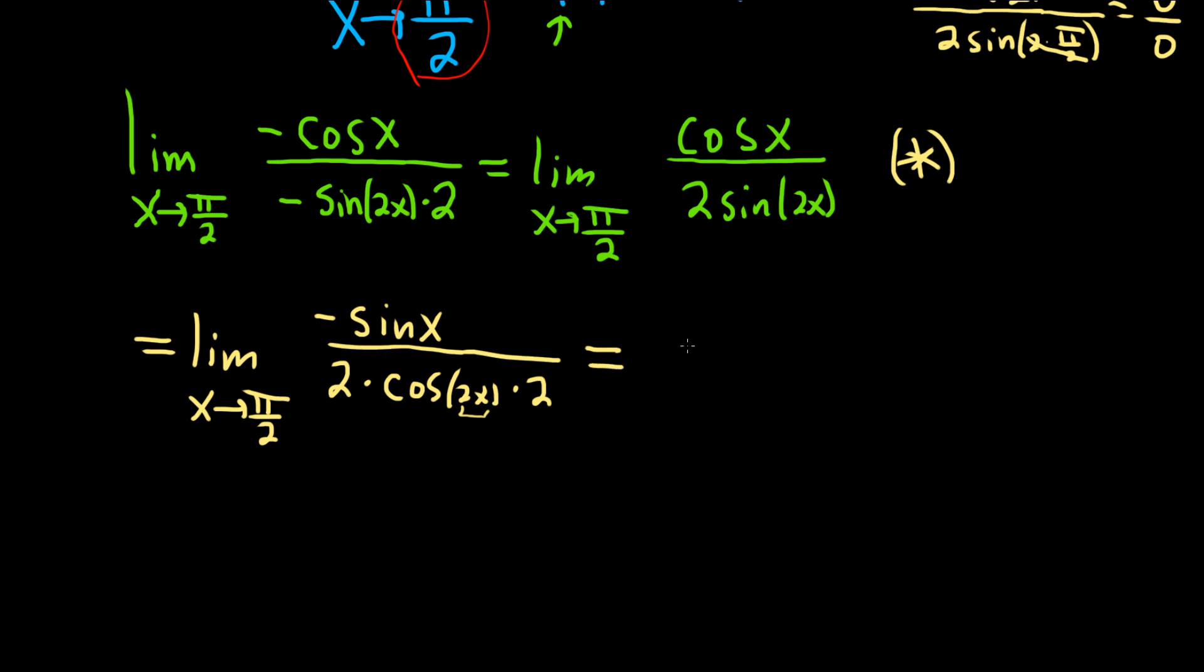We'll just get cosine of pi. So we drop the limit sign. This will be negative sine of pi over 2. On the bottom we have 2 times 2, which is 4, and then we have cosine of 2 times pi over 2.